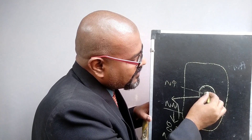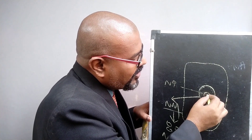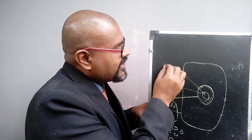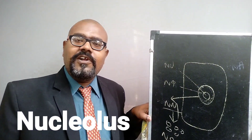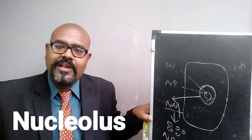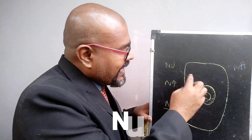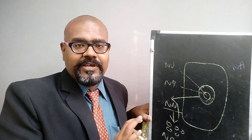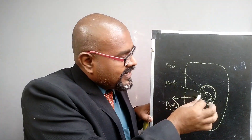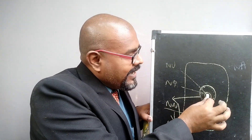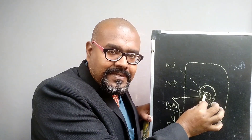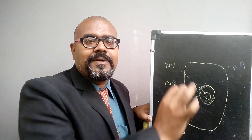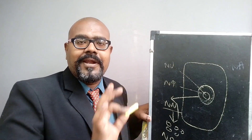Inside the nucleus there is a small core-like structure called the nucleolus. So the small descriptive structure of the nucleus consists of the double-layer nuclear membrane, nucleoplasm, nucleolus, and nuclear pores in the nuclear membrane.